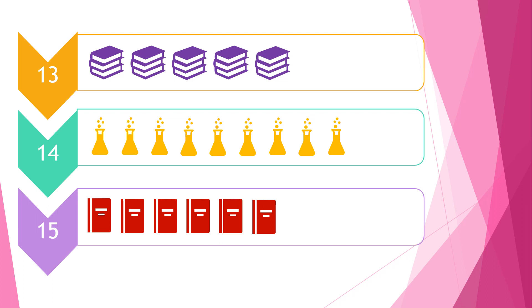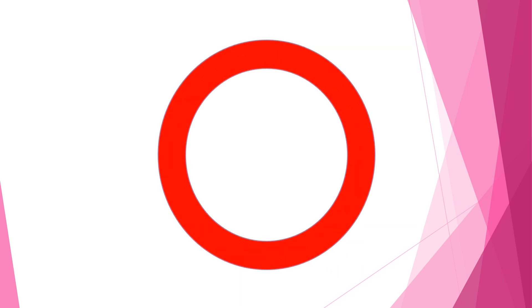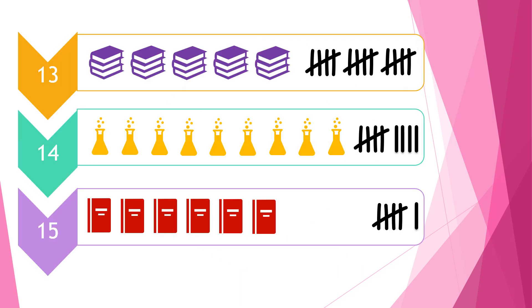We use our tally systems, and our 10 seconds start now. You should have 15 books, 9 flasks, and 6 notebooks.